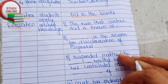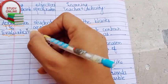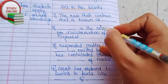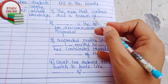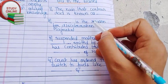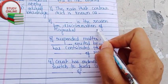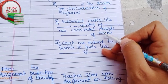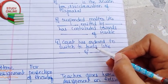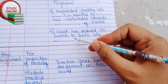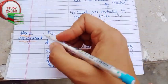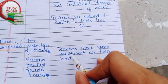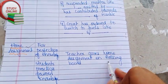For application and evaluation, I have given four fill-in-the-blank questions: the acid rain that contains acid is known as blank; blank is the reason for discoloration of the Taj Mahal; suspended matter like blank emitted by blank has contributed towards blank of marble; and the court has ordered to switch to fuels like blank and blank. The last part is home assignment — for perfection of knowledge, the teacher gives home assignment on the rolling board.